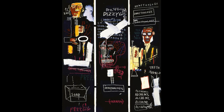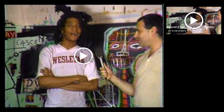He would sign his graffiti with the tag SAMO, which stands for 'same old' — fill in the blank. He remained anonymous for a very long time in the late 70s, and with his graffiti art would strategically target art galleries as a criticism of the commercial art world. He was a self-taught artist, Haitian-American and Puerto Rican, and took a lot of his ideas from literature and books.